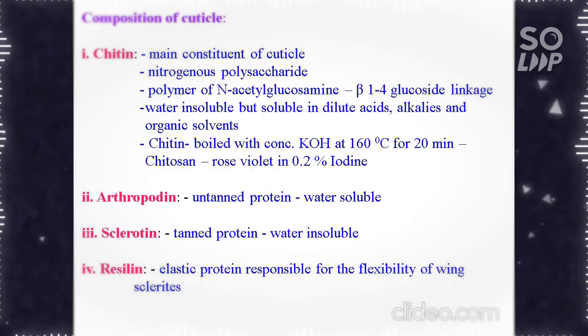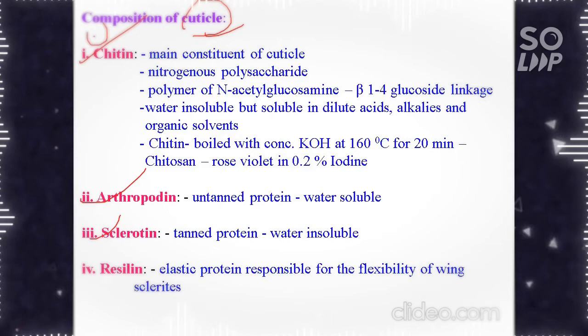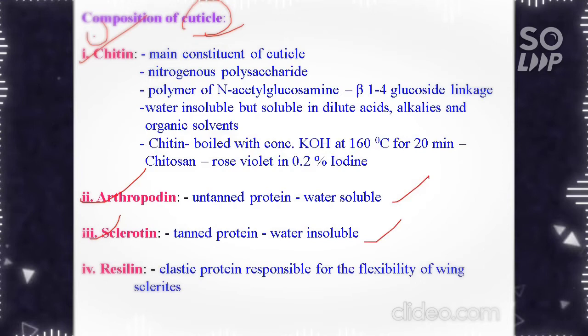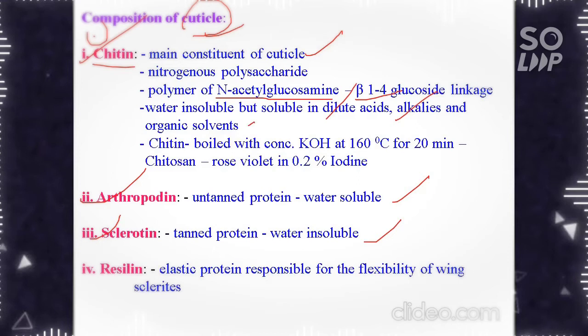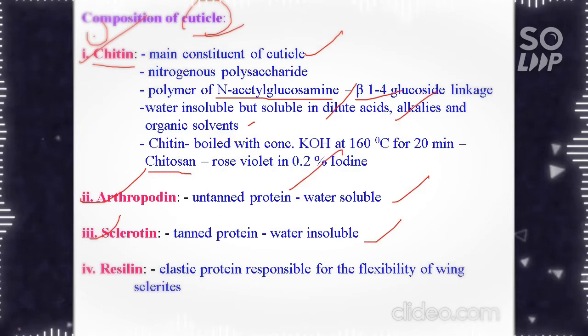The composition of insect cuticle includes chitin, arthropodin, sclerotin and resilin. In general, the cuticle is composed of two components: chitin and protein, either arthropodin or sclerotin. Chitin is the main constituent of cuticle, a nitrogenous polysaccharide and polymer of N-acetyl glucosamine with beta-1,4 glycosidic linkages. It is insoluble in water but soluble in dilute acids, alkalis and organic solvents. If chitin is boiled with concentrated KOH at 160 degrees Celsius for 20 minutes, it gives chitosan which on treatment with 0.2 percent iodine gives rose violet color.